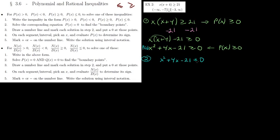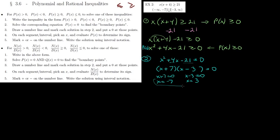This is a standard quadratic in standard form. You could use the quadratic formula, but we can also factor by finding two numbers whose product is −21 and whose sum is +4. That's +7 and −3. So we factor as (x + 7)(x − 3) = 0, giving solutions x = −7 and x = 3.